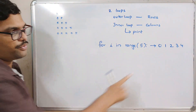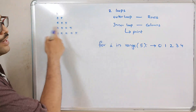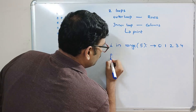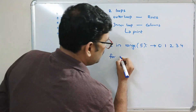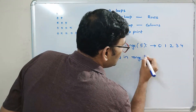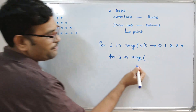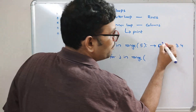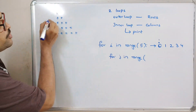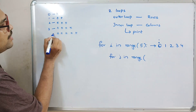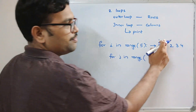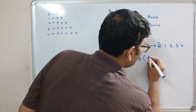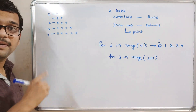For every row we need to print a value. The inner loop handles the columns: `for j in range(i + 1)`. In the first row, i is 0, so i+1 is 1 — one star is printed. We write `i + 1` inside the range so the star count matches the row number.